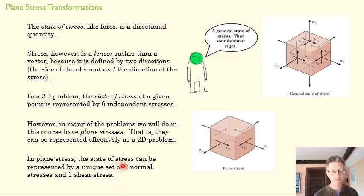That state of, just like that vector F on the previous slide was unique and unchanging in those three coordinate systems, a state of stress can be described by two normal stresses and a shear stress.